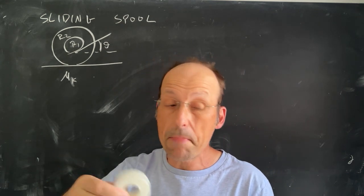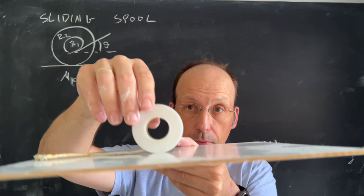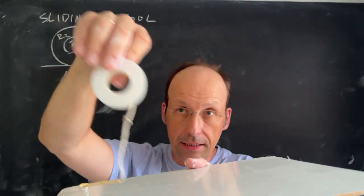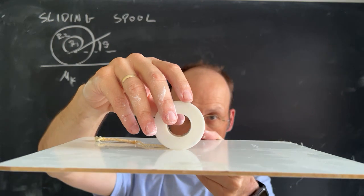This is the famous, or maybe even infamous, sliding spool problem. So here I have a spool with a string wrapped around it. The spool has an inner radius and an outer radius, and I'm going to try to do this.